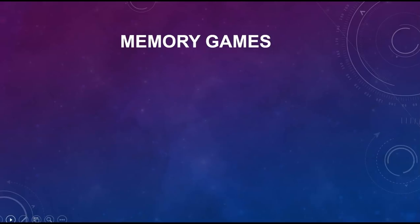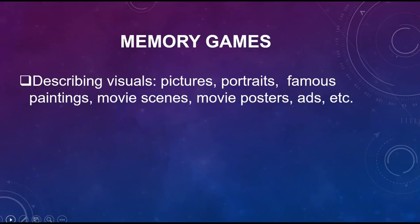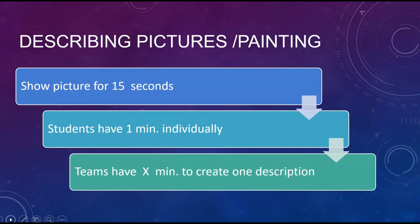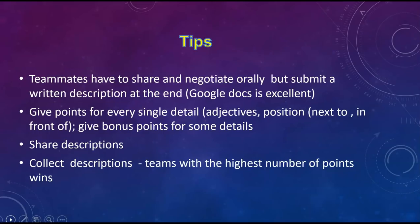Another type of game I use regularly are memory games. They're great for practicing descriptions. Students have to look at an image for a short period of time and then describe it from memory — pictures, portraits, famous paintings, movie posters or scenes, advertising images, cartoons, etc. The principle is simple: it's always in teams so they can discuss and compare their memories. I usually include several levels of difficulty. First they look at the image for 10-15 seconds — depending on the image. Then they have a minute to work individually to jot down what they remember, without starting to talk right away. Then they get together in teams of three or four, work with their teammates, and write a detailed description. I use Google Docs so everybody can contribute.